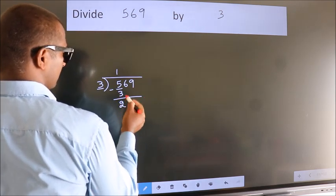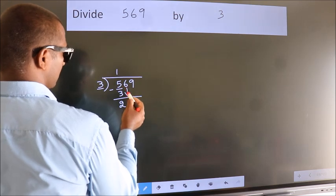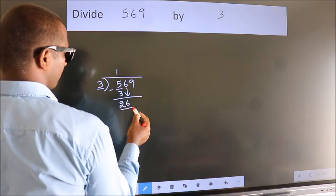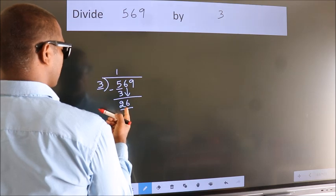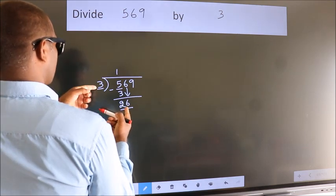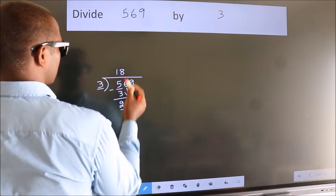After this, bring down the beside number. So, 6 down. So, 26. A number close to 26 in 3 table is 3 8 24.